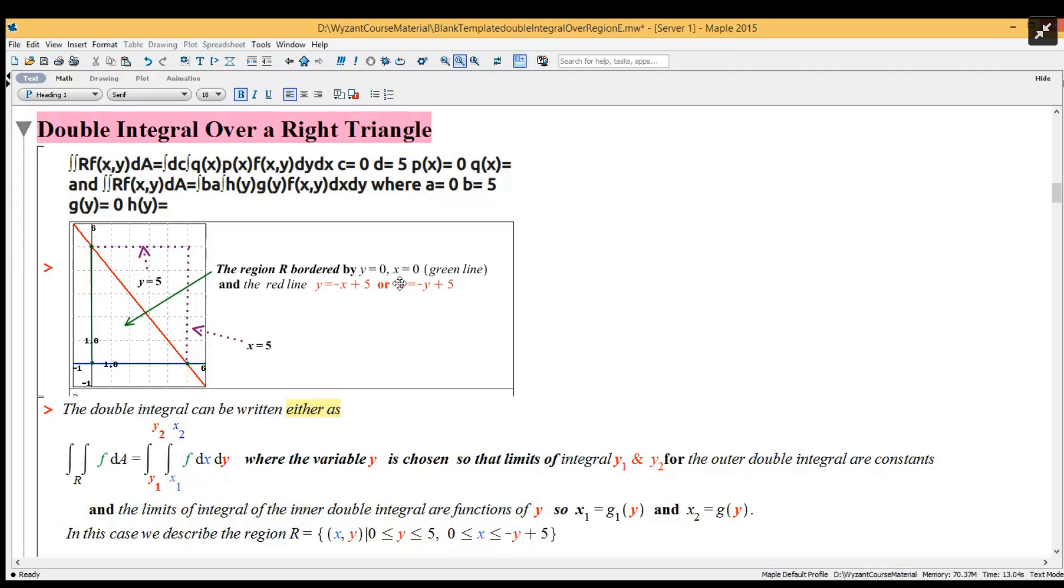Or we can rewrite it as x equals minus y plus five. And I also added the purple borderline y equals five and the purple vertical borderline x equals five. So that's all we need.